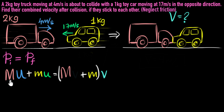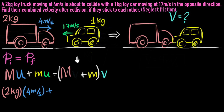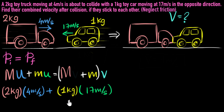Let's substitute. The mass of the truck is 2 kg times its initial velocity of 4 meters per second, plus the mass of the car, which is 1 kg. Now comes the important part — can we say its velocity is 17 meters per second? No, we can't. The main reason is velocities are direction sensitive. If the truck's velocity is to the right and we take that as positive, the car's velocity is in the opposite direction, so we should call it negative — that's very important, otherwise you'll get the wrong answer. So the car's velocity is negative 17 meters per second. When things are in opposite directions, one velocity is positive and one is negative.